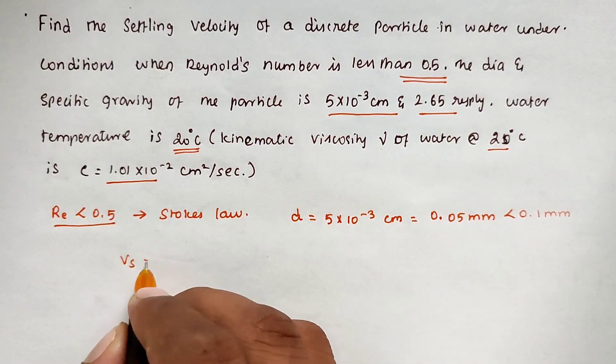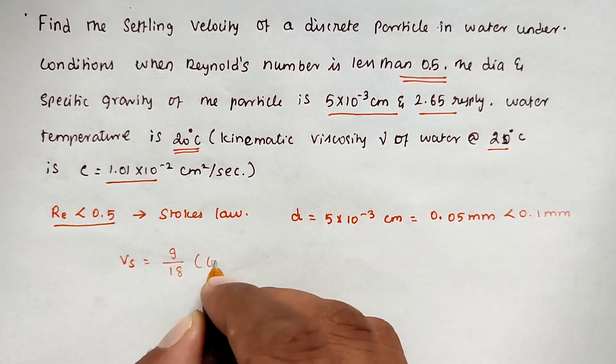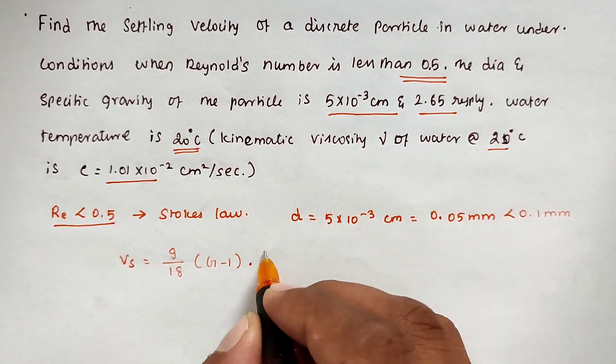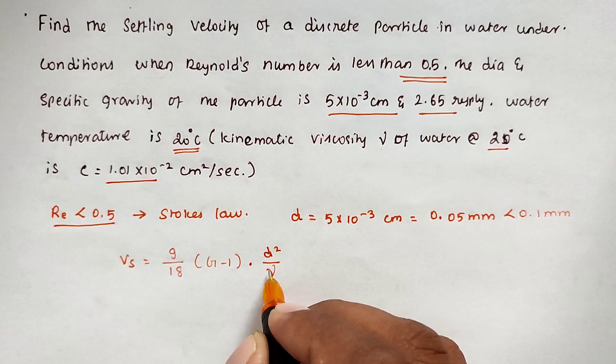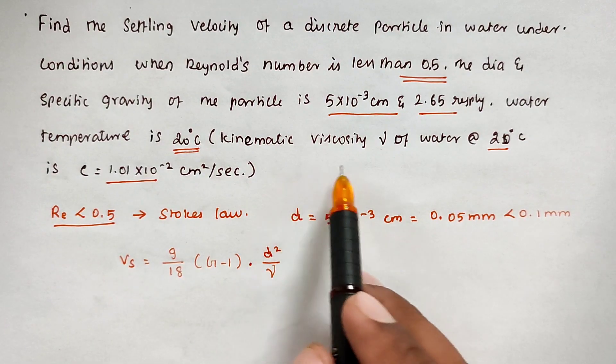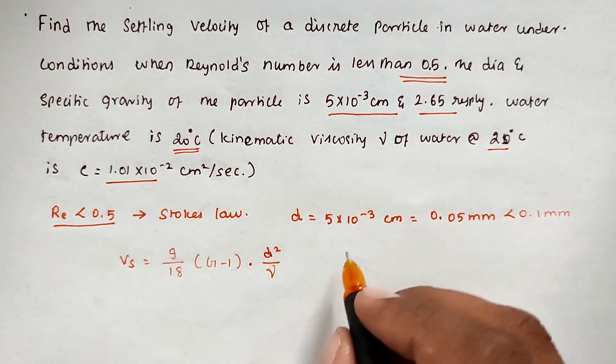V = (g/18) × (G-1) × (d²/ν), where ν is the kinematic viscosity. We can use this formula. The value of g is 981 cm/s², and ν = 1.01×10^-2 cm²/sec.